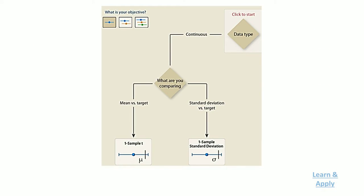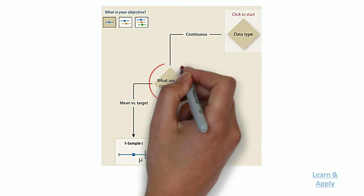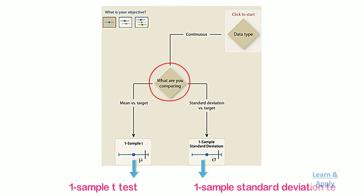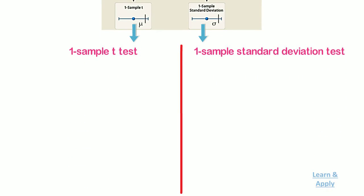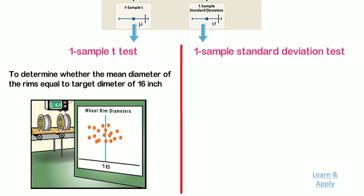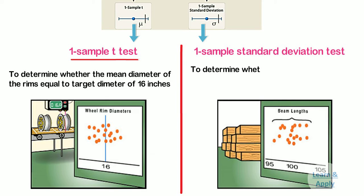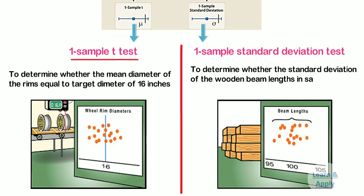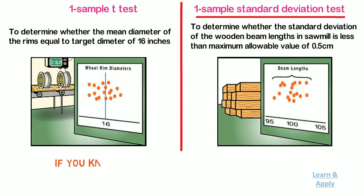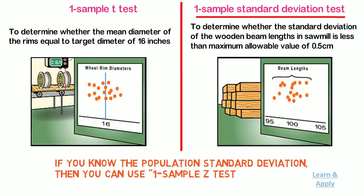If the data is continuous, the second selection criteria is: what are you comparing? If you are comparing mean versus a target, use the one-sample t-test. If you want to compare standard deviation versus a target, use the one-sample standard deviation test. For example, if an inspector wants to determine whether the mean diameter of rims equals the target diameter of 16 inches, then use the one-sample t-test. Whereas if a distributor wants to determine whether the standard deviation of wooden beam length in a sawmill is less than the maximum allowable value of 0.5 cm, then use the one-sample standard deviation test. If you know the population standard deviation, you can use the one-sample z-test.